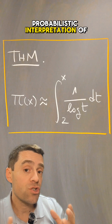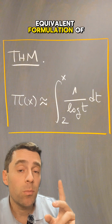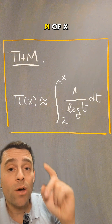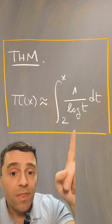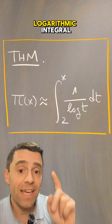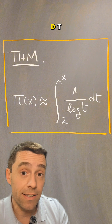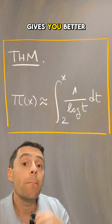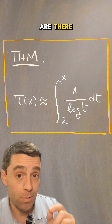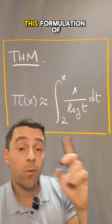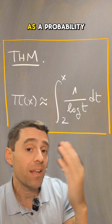To explain that probabilistic interpretation of the prime number theorem, here is an equivalent formulation. Pi of x, the prime counting function, is approximately asymptotically the logarithmic integral — the integral from 2 to x of 1 over log of t dt. This function gives you better values that approximate how many primes there are up to x. And now we can use this formulation of the prime number theorem to interpret it as a probability.